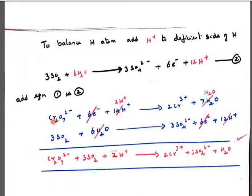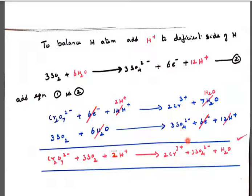So now everything is balanced. Writing the final equation: Cr₂O₇²⁻ + 3SO₂ + 2H⁺ → 2Cr³⁺ + 3SO₄²⁻ + H₂O. It is completely balanced.